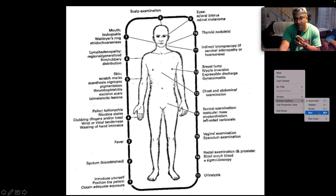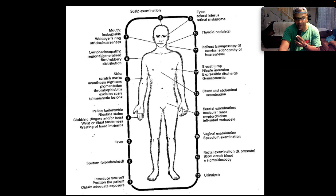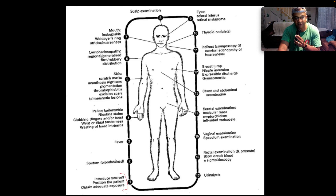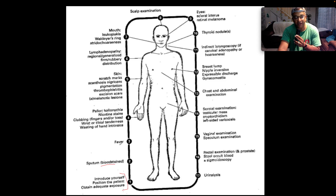As usual, we start off by introducing ourselves to the patient, positioning the patient — ideally semi-Fowler's — and obtain adequate exposure. Then just step back and look at the patient as the gestalt of the case. If the patient is acutely distressed, they have a normal mental state. If the sputum pot is available, examine it for blood-stained sputum, which may speak to something malignant going on in the lungs. Does the patient have a fever — so take the temperature.